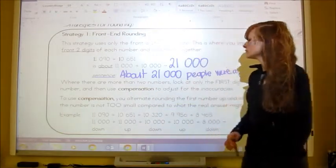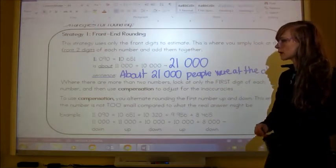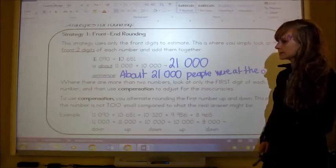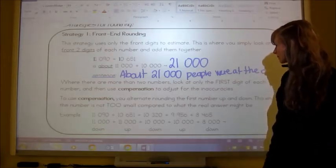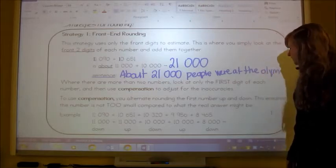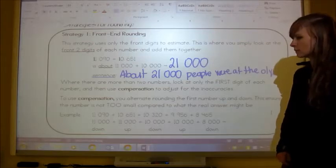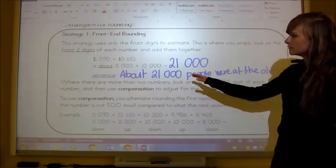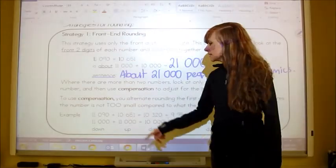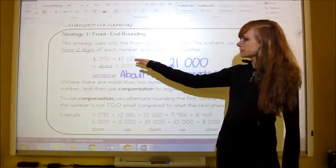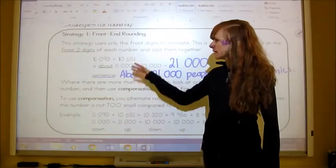Where there are more than two numbers, look at only the first digit of each number and then use compensation to adjust for the inaccuracies. To use compensation, you alternate rounding the first number up and down. This ensures the number is not too small compared to what the real answer might be. You'll notice that there's 651 after this one.